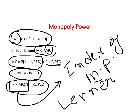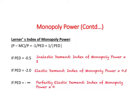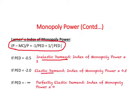Monopoly power is inversely related to price elasticity of demand — specifically to its absolute value. If you have inelastic demand relative to elastic demand, monopoly power will be greater under inelastic demand conditions.